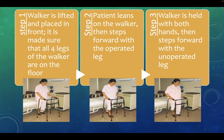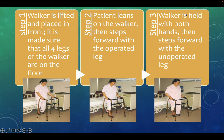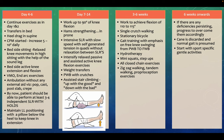Teaching the patient to walk with a walker: Step 1 — lift the walker and place it in front, ensuring all four legs are on the floor. Step 2 — the patient leans on the walker and steps forward with the operated leg. Step 3 — the walker is held with both hands and the patient then steps forward with the unoperated leg.